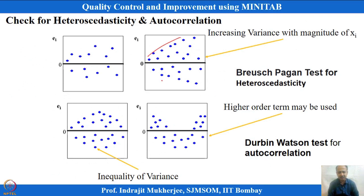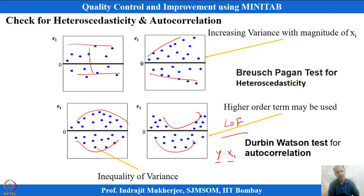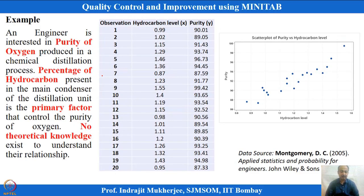A funnel shape in residual vs. fit plots indicates heteroscedastic behavior. If a pattern exists, it may indicate that a linear model is insufficient and higher-order terms are needed — this is reflected as lack of fit. If multiple observations exist at a given x level, lack of fit can be calculated. If the residual plot seems random, that is the expected behavior. If a systematic pattern appears, a transformation on y should be applied before regressing.